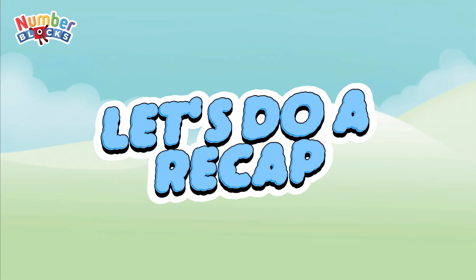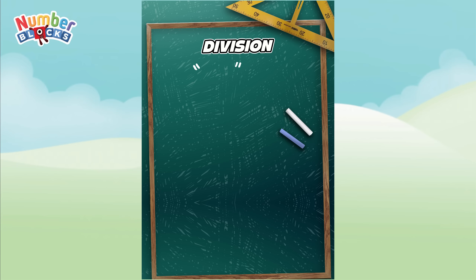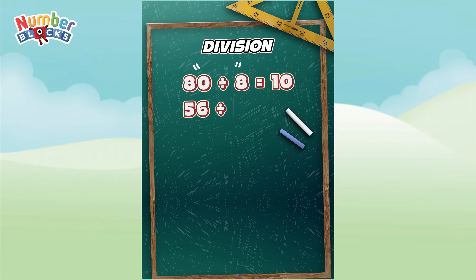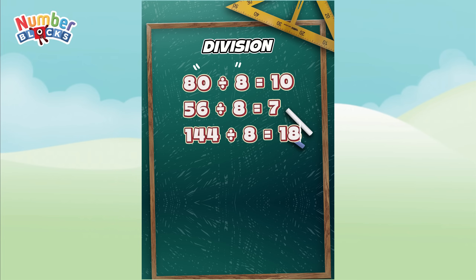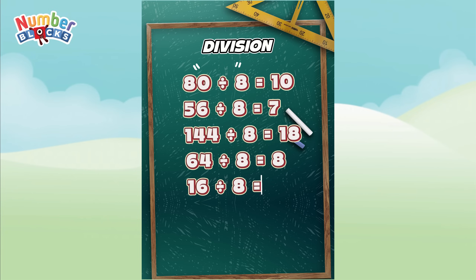Let's do a recap. 144 divided by 8 is equal to 18. 64 divided by 8 is equal to 8. 16 divided by 8 is equal to 2.